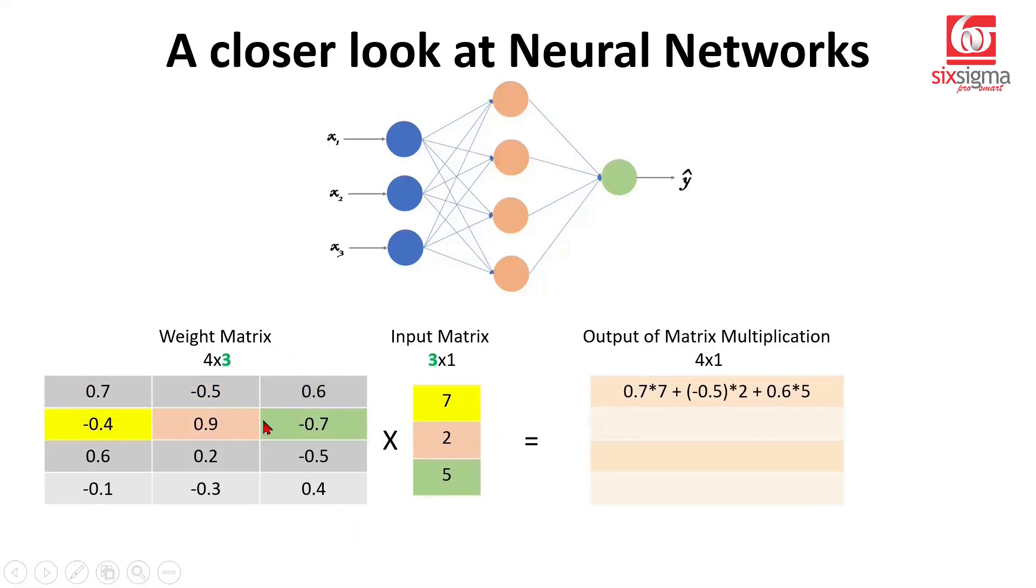Likewise, this would represent the weights corresponding to these connections which are the inputs to the second hidden neuron. Of course, this will be multiplied with the color coding element wise and you'll get this result. Likewise, the third one, same inputs but the weights are different. These will be the input weights for the third neuron multiplied by the actual input values and you get this. Likewise, the fourth one.